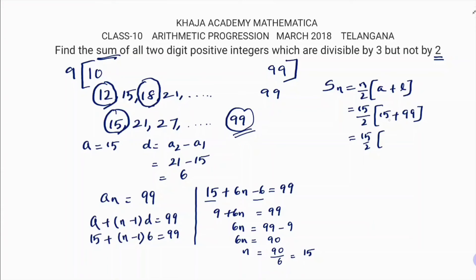15 plus 99. Now here 15/2 times (15 plus 99). So 99, 100, 114. Next you can calculate 15/2 - 2 times 1 you can cancel, 2 times 57. So 15 times 57.